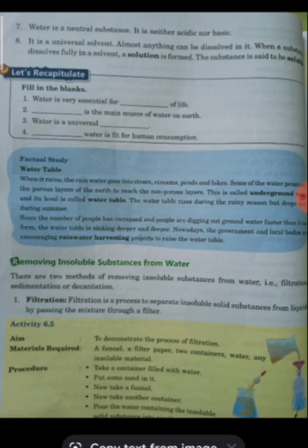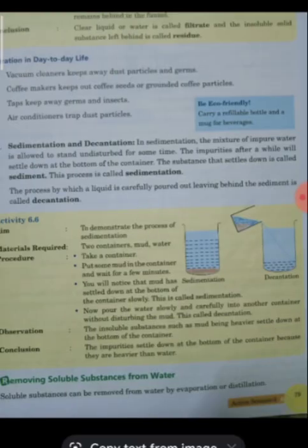The clear liquid collected after filtration is called the filtrate, and the insoluble substance left behind on the filter paper is called the residue. Filtration is used in our day-to-day life: in vacuum cleaners to separate dust particles and germs, in coffee makers to separate seeds from liquid, and in air conditioners to separate dust particles from water.